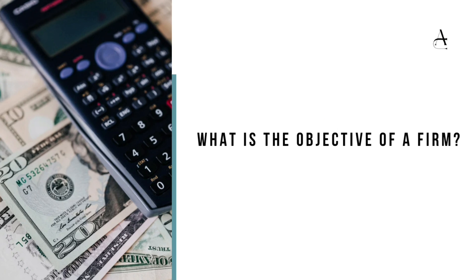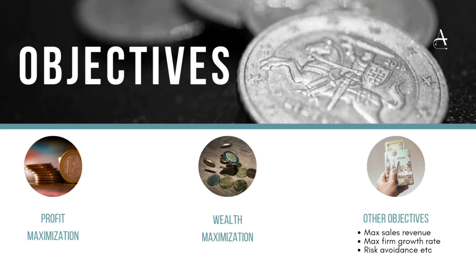What exactly is the objective of a firm? There are many objectives. The most important is profit maximization. If it is a for-profit organization, it aims to make profit — and not just profit, but to maximize it. Similarly, just profit is not enough; firms also aim at wealth maximization for themselves and their shareholders. Other objectives include maximizing sales revenue or the growth rate of the firm, and avoiding risks. If such a question is asked, you may start by writing what a firm is, add a short paragraph on the interdependence of consumers and firms, and then discuss these objectives.